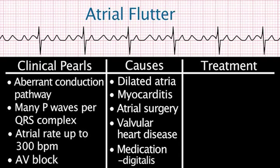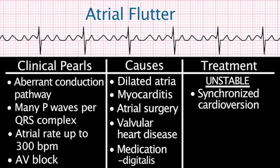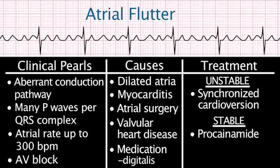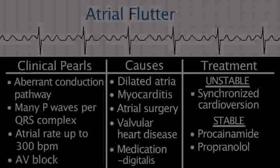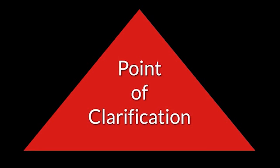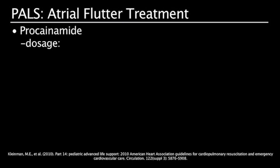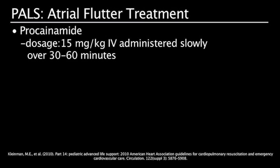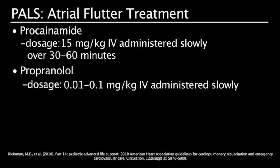Treatment for atrial flutter includes synchronized cardioversion if hemodynamically unstable. If stable, administer procainamide or propranolol. The pediatric dose for procainamide is 15 milligrams per kilogram IV, administered slowly over 30 to 60 minutes. The general IV dose for propranolol for all pediatric patients is 0.01 to 0.1 milligrams per kilogram, administered slowly.